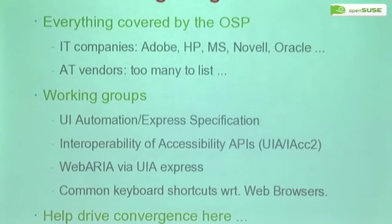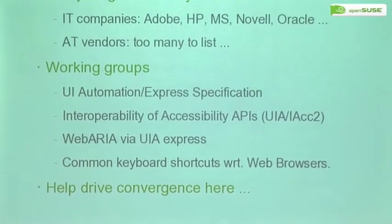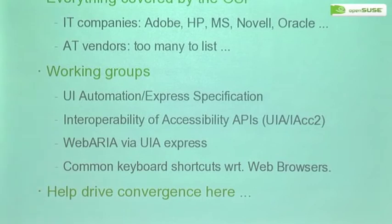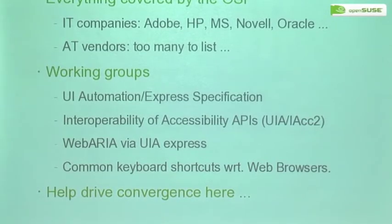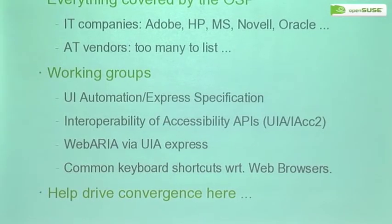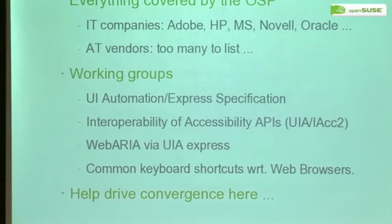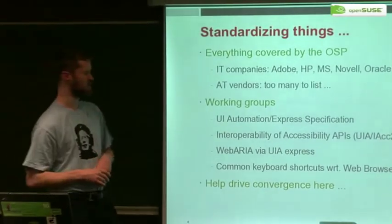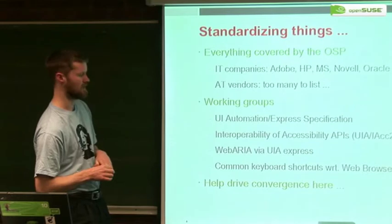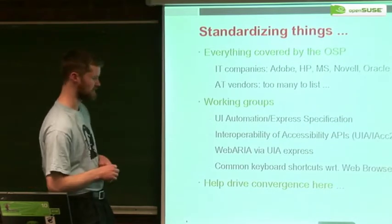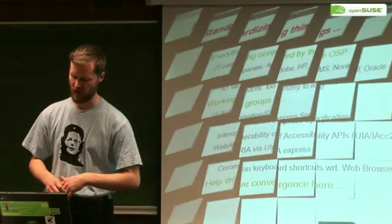Basically we want to drive convergence. It's a relatively small space with relatively little investment in it, such that it's possible to know almost everyone who is everyone in accessibility and get them in a room. It makes no sense to have multiple competing APIs and having to choose which one to implement. The net result is clearly worse accessibility and wasting a relatively limited resource pool unnecessarily.